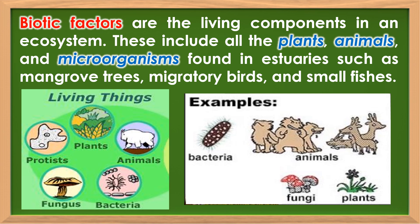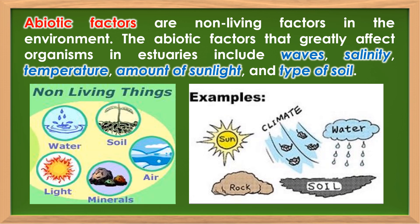Biotic factors are the living components in an ecosystem. These include all the plants, animals, and microorganisms found in estuaries such as mangrove trees, migratory birds, and small fishes. Abiotic factors are non-living factors in the environment. The abiotic factors that greatly affect organisms in estuaries include waves, salinity, temperature, amount of sunlight, and type of soil.